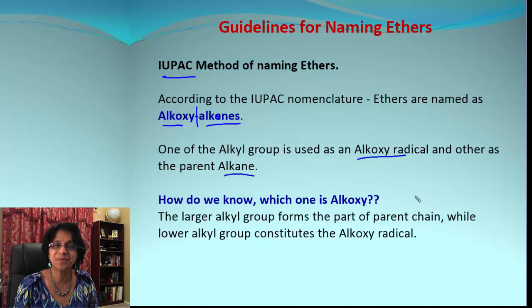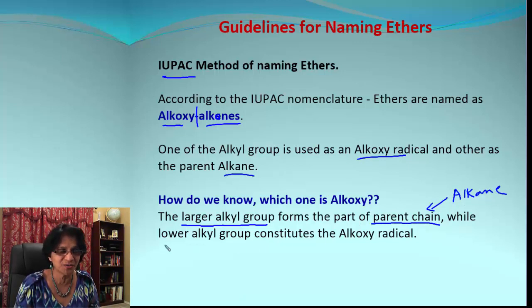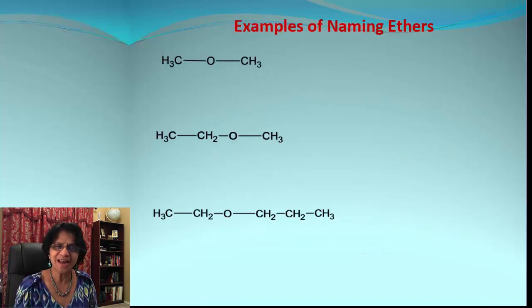It's pretty simple. The larger alkyl group - that is the part of the parent chain or that will be the alkane part - and the shorter one or the lower one, that alkyl group is the alkoxy radical.